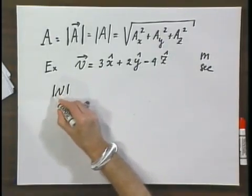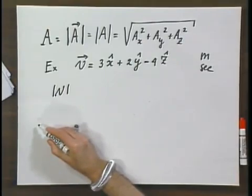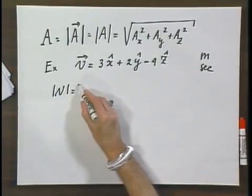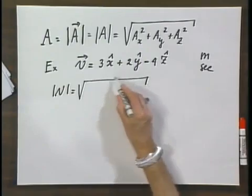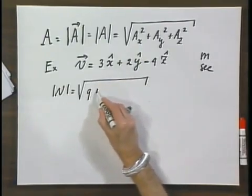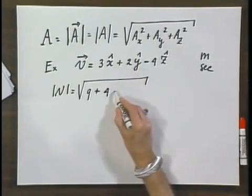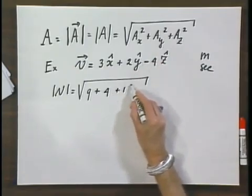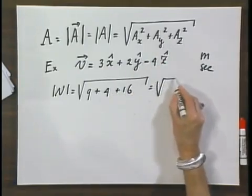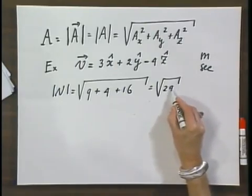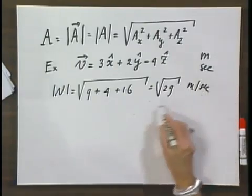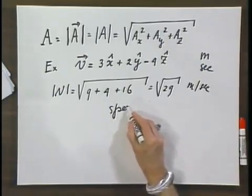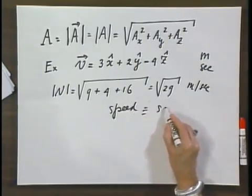The magnitude of this velocity vector equals the square root of 3 squared, which is 9, plus 2 squared, which is 4, plus minus 4 squared, which is 16. That's the square root of 29 meters per second. This is the speed, and so this is a scalar.